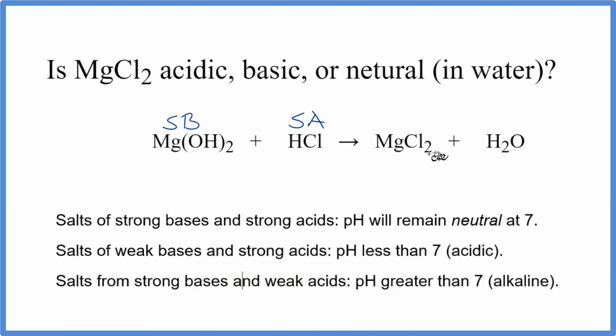So we look at our rules. We have this MgCl2, it's a salt of strong bases and strong acids. We expect that our pH will remain neutral at 7. So we think that MgCl2 will be neutral in water. So that's one way to look at this.